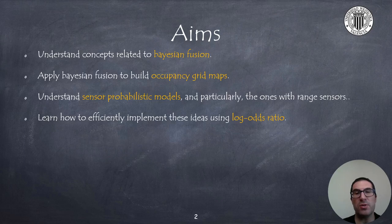The aims of the presentation are to understand concepts related to Bayesian fusion and how it can be applied to map building problems using occupancy grid maps. In addition, I will explain how to obtain sensor probabilistic models, particularly for range sensors such as laser and ultrasound sensors. Finally, I will explain how to efficiently implement the map building process using log-odds ratio.